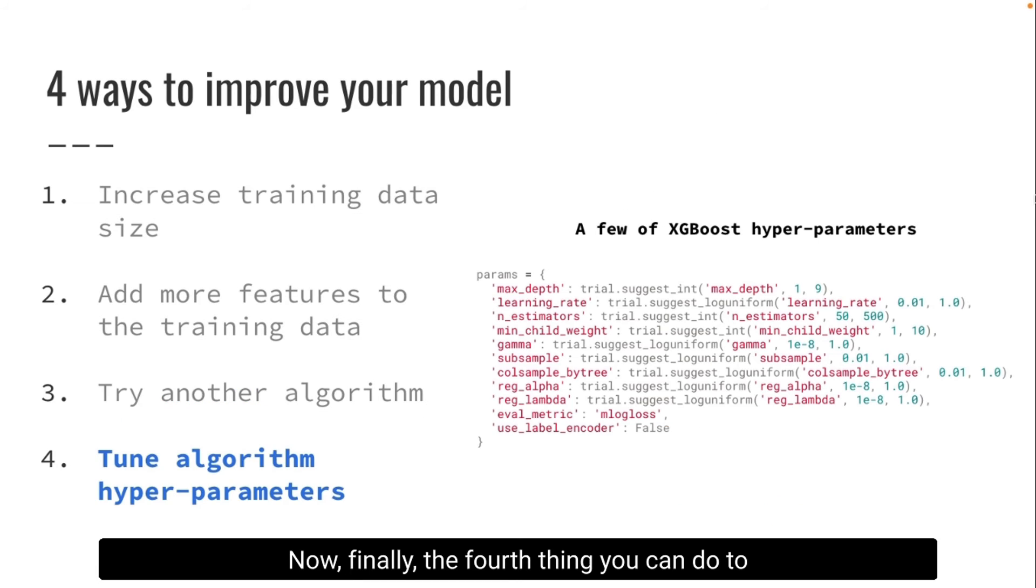Now finally, the fourth thing you can do to build a better model is to tune what is called the hyperparameters of your algorithm. For example, XGBoost is a boosting algorithm that works really well out of the box, but if you want to tune its performance, you can start playing with the hyperparameters. The hyperparameters are like external parameters to the model that you need to fix before training the model. So essentially, tuning algorithm hyperparameters is a very complex high-dimensional search problem. Fortunately, there are smart ways to find hyperparameters, and I'm going to show you how using Python libraries that are open source. So tuning hyperparameters is something that almost always helps you improve results, but improvement is normally much smaller than increasing the training dataset or adding more features.